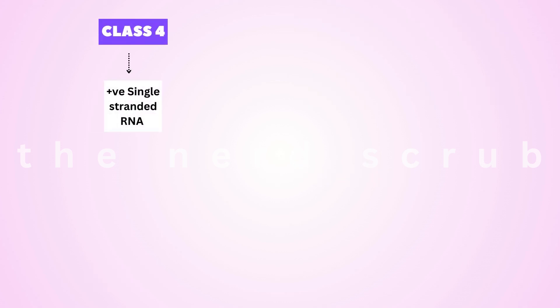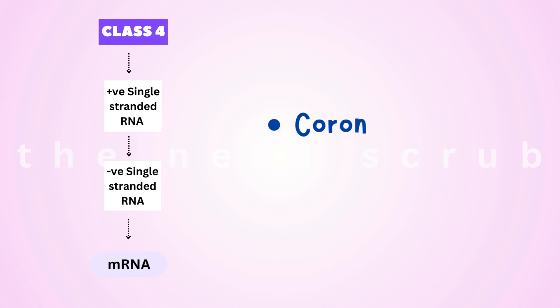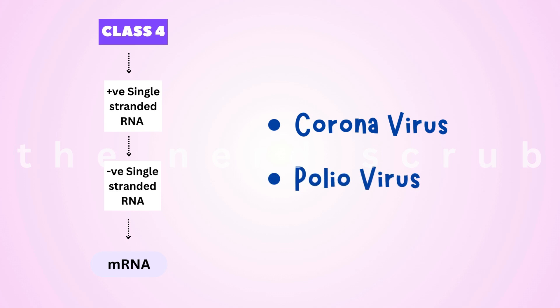Class 4 includes viruses that have positive single-stranded RNA genomes, and their RNA can function directly as messenger RNA, which is translated by the host cell's ribosomes into viral proteins. Examples include the coronavirus, responsible for diseases like COVID-19, and poliovirus, which can cause poliomyelitis.